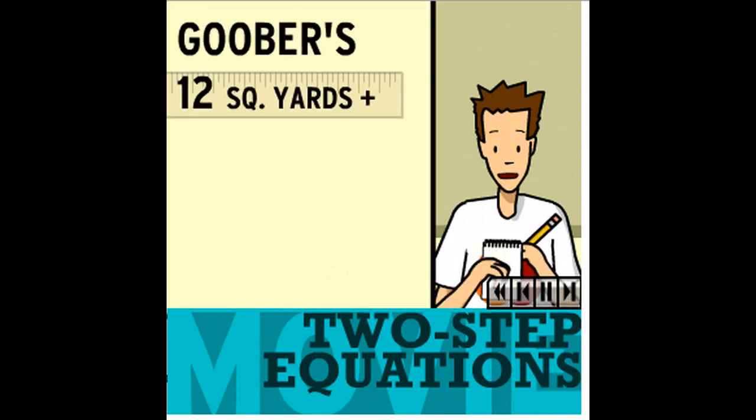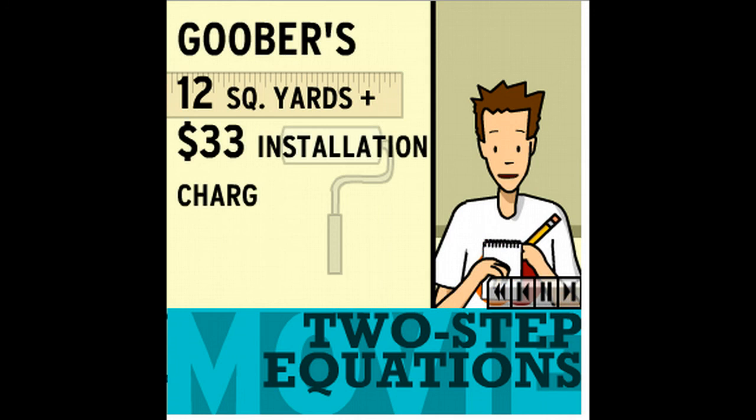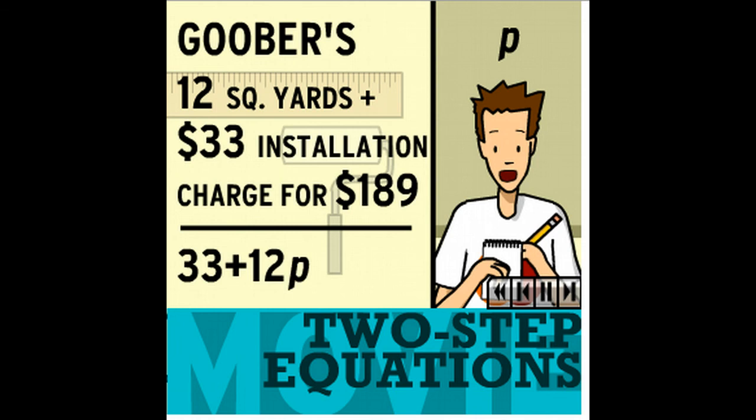Okay, Goober's is offering 12 square yards plus the $33 installation charge for $189. Let's call that unknown price per yard, P. $33 plus 12 times the unknown wallpaper price, P, should get us to $189.